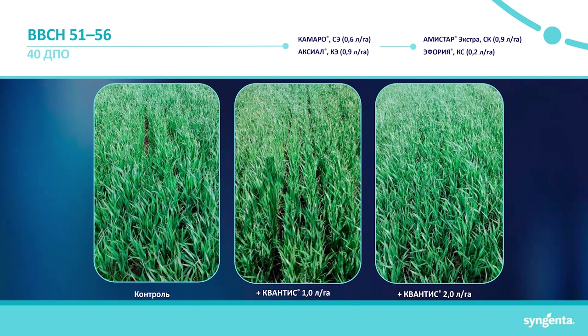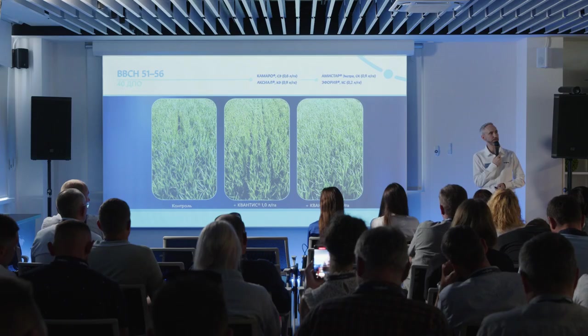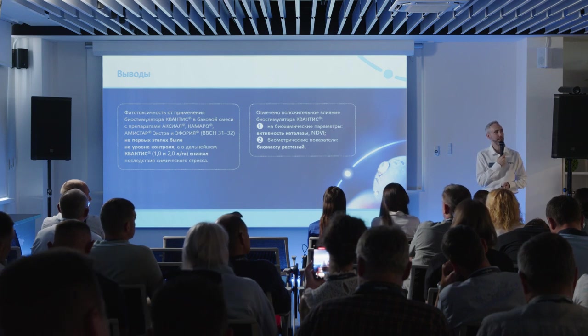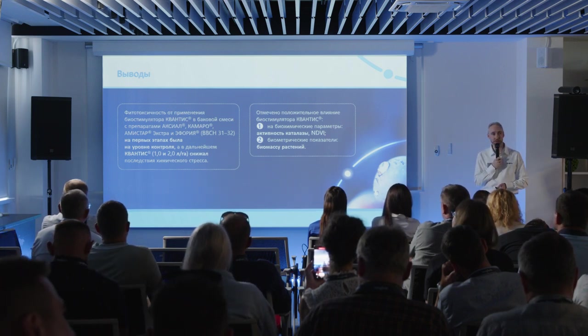The most important thing for us is to obtain a well-developed, fully filled ear with the maximum number of spikelets. If we apply treatment by the end of the tillering stage, we can influence the number of spikelets. At the flag leaf stage later, it's about grain filling and thousand-seed weight. Under stress, wheat will reduce these spikelets.